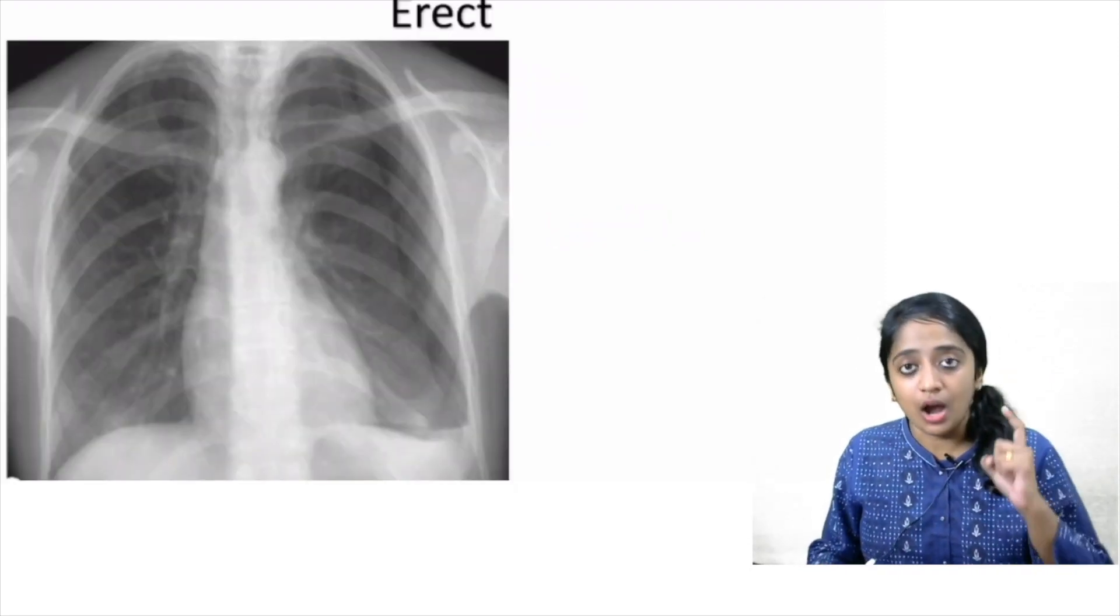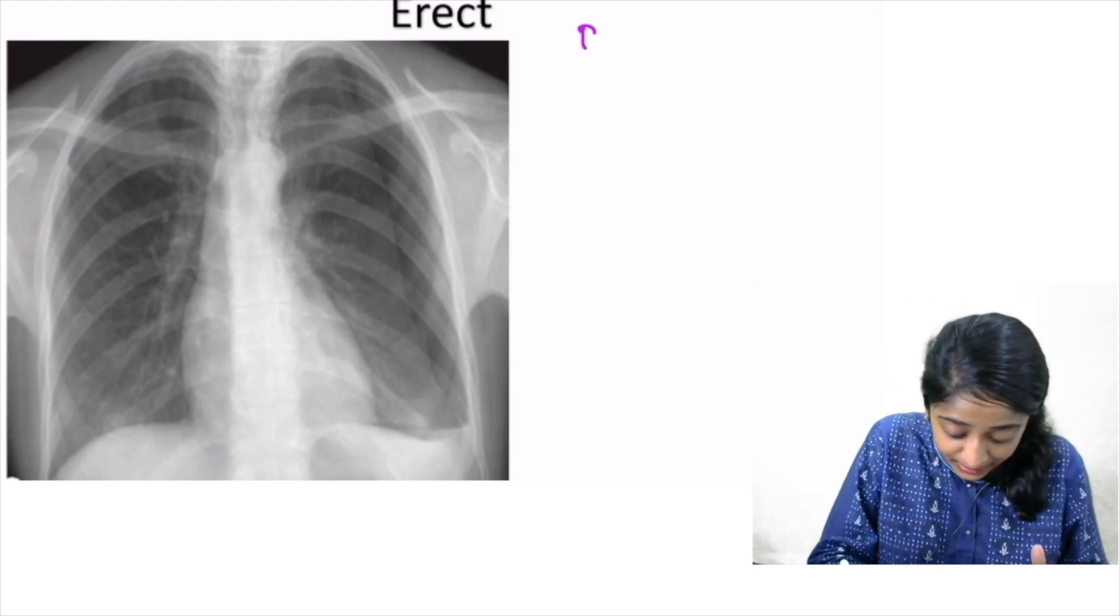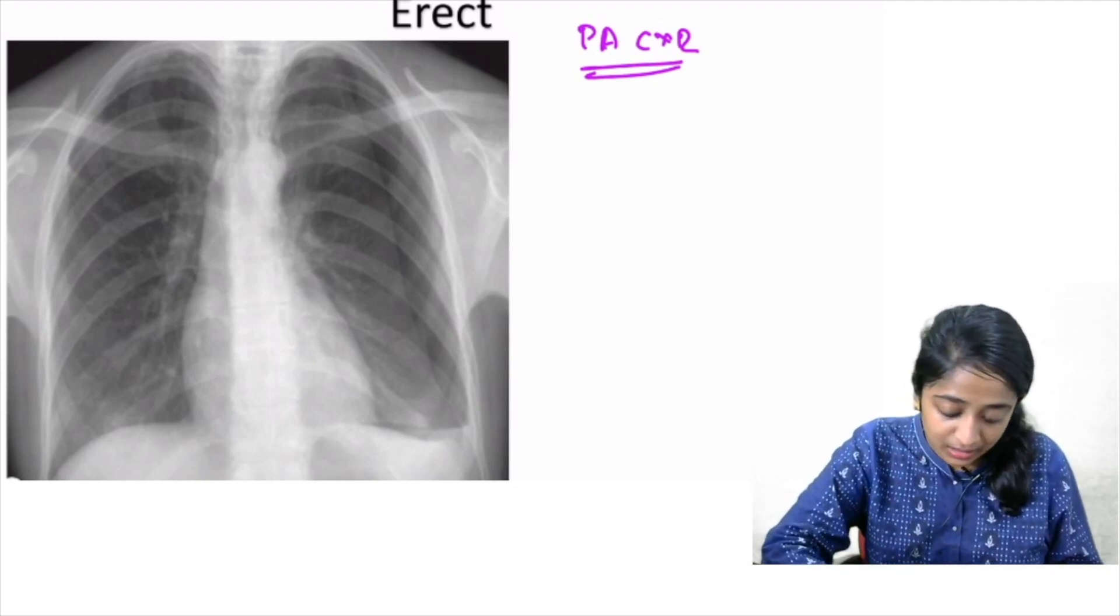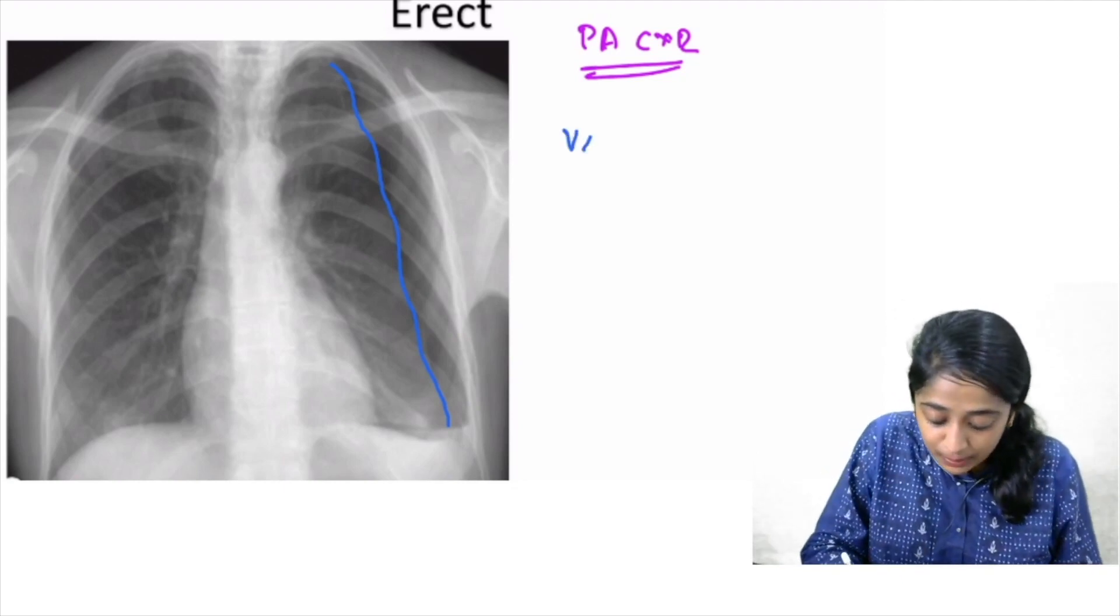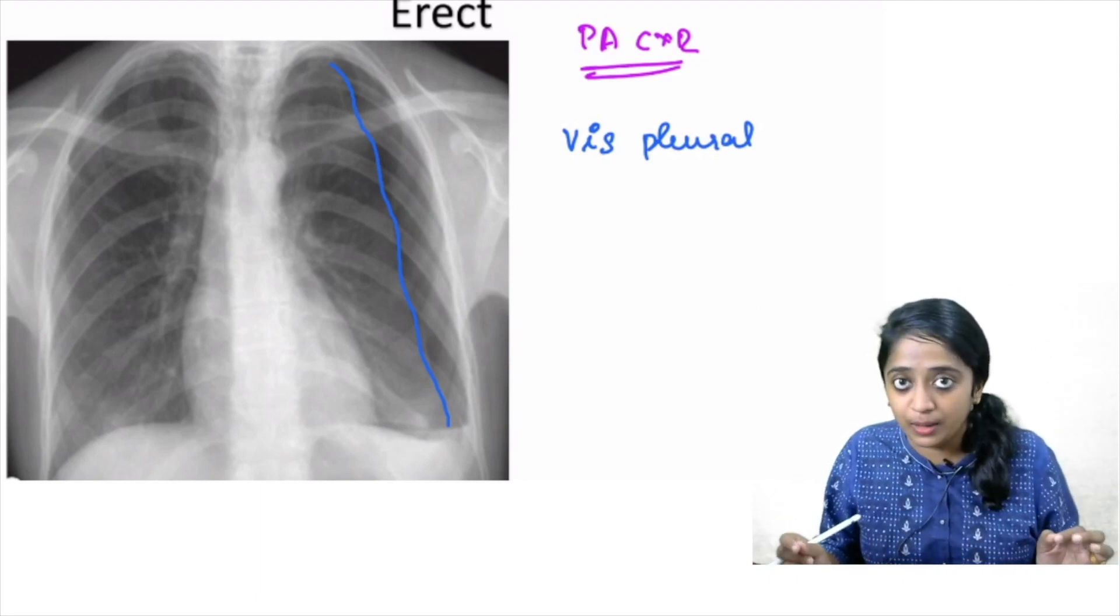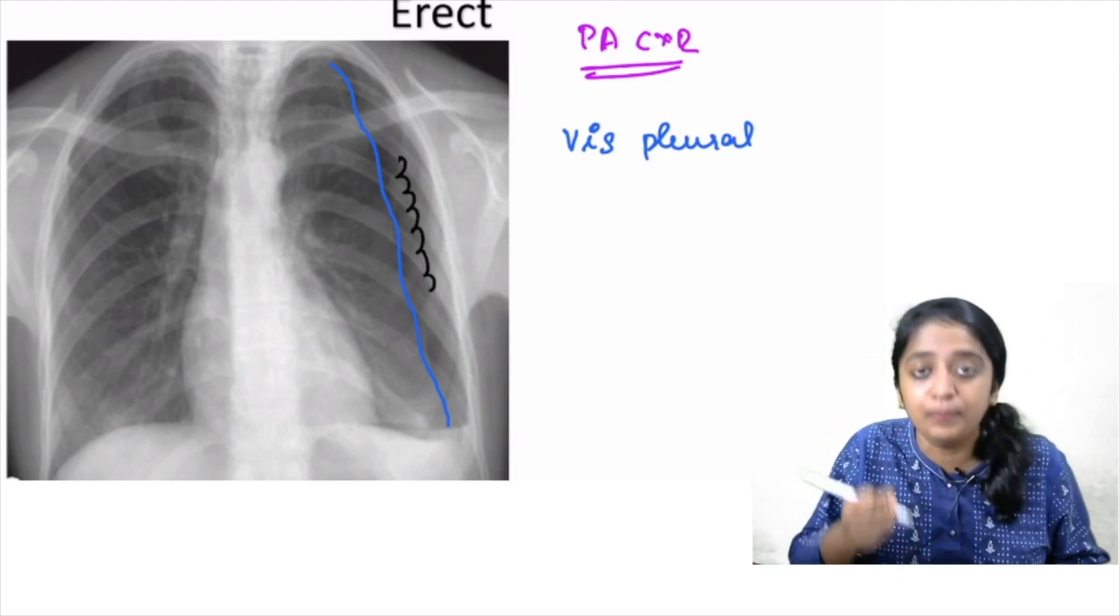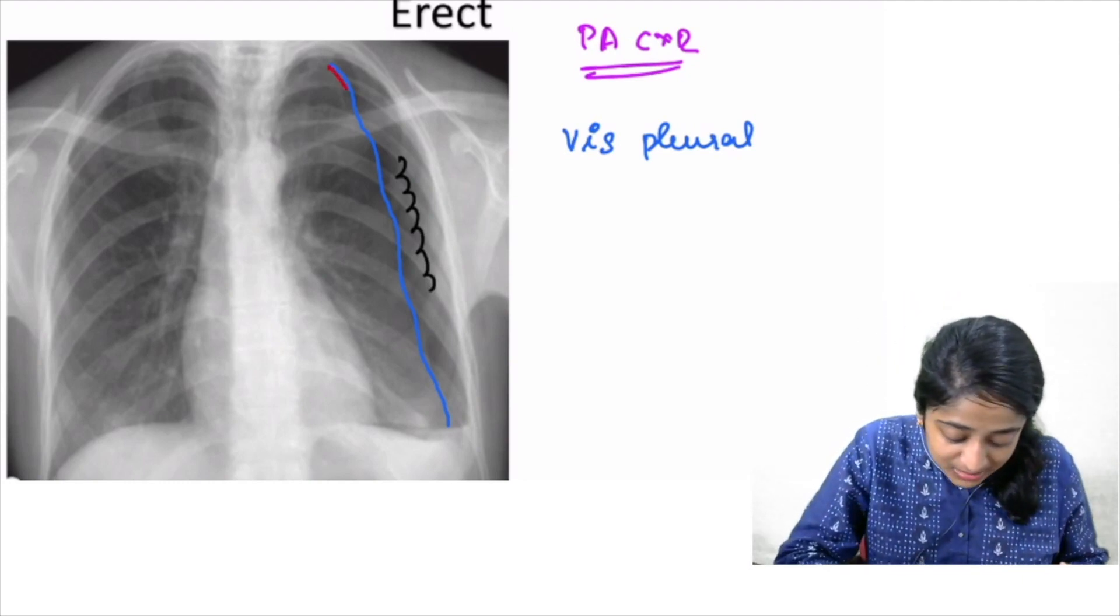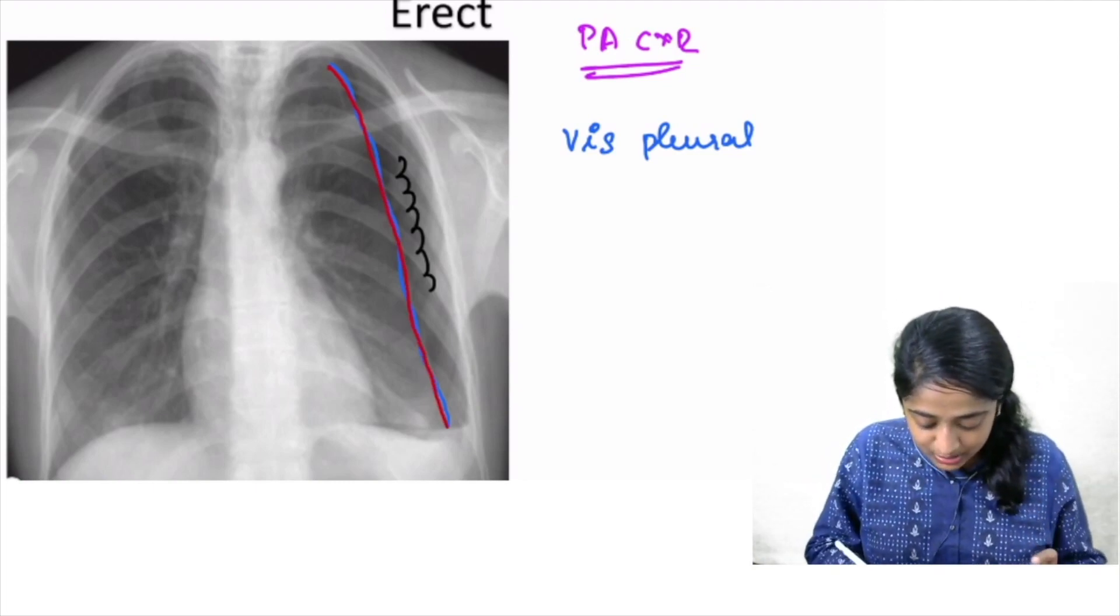Now let's quickly see how pneumothorax appear in radiograph. With erect chest PA radiograph, what are you going to look for? It is clearly shown that there is a white line of the displaced visceral pleura. So this is the visceral pleura line, which is apparently separated from the parietal pleura due to the air trapped within the pleural cavity. So what are the ancillary features that you have to look for? Along with this white line of displaced visceral pleura, you should ensure two more things.